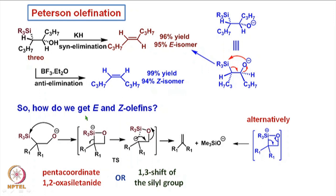Now we look at another aspect called Peterson olefination, although it is not directly a C-C bond forming reaction, it is interesting silicon-based chemistry. For example, if we start with a molecule which is a beta-silanol with a 3O configuration and treat it with potassium hydride, elimination follows a syn path to lead to formation of the E isomer. On the other hand, treating this 3O molecule with BF3 etherate causes anti elimination to form the Z isomer as the major product. So it is a highly stereospecific reaction — one under basic conditions and the other under acidic or Lewis acidic conditions.